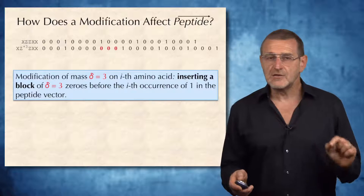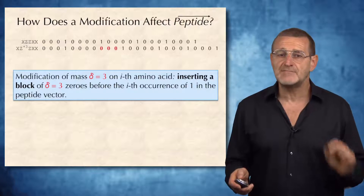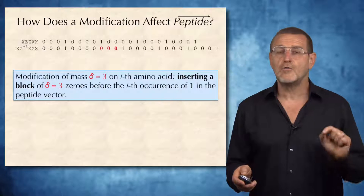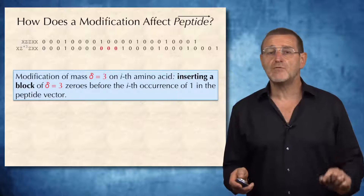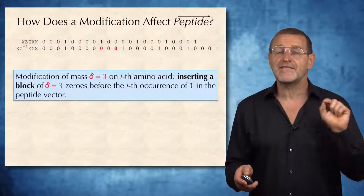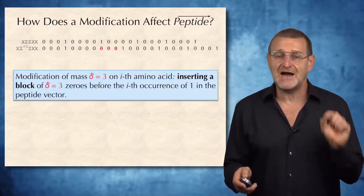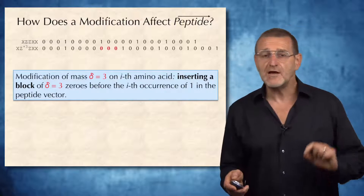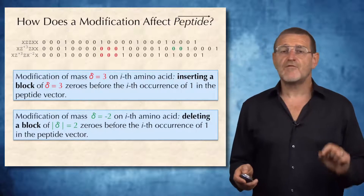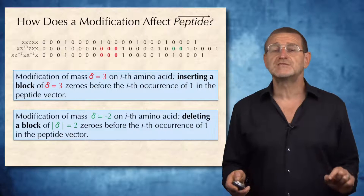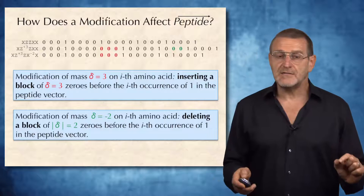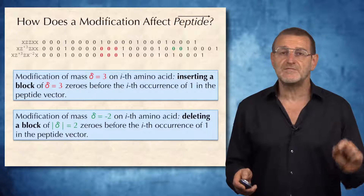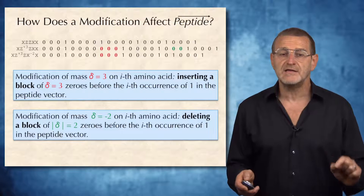Let's also take a look at how a modification affects a peptide vector. In this particular example, a modification of mass 3 on the i-th amino acid essentially amounts to inserting a block of three consecutive zeros before the i-th occurrence of 1 in the peptide vector. For a modification of negative mass, minus 2 in this case, the modification corresponds to deleting a block of two zeros before the i-th occurrence of 1 in the peptide vector.